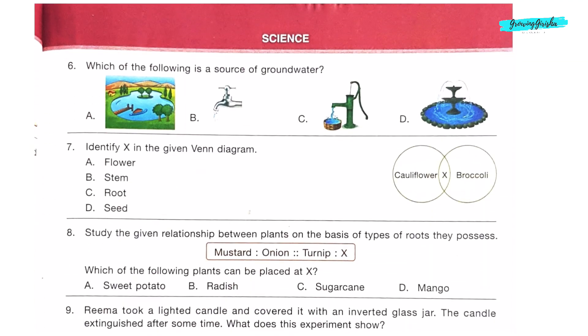Question 6: Which of the following is the source of ground water? Hand pump is a source of ground water, so option C. Question 7: Identify X in the given Venn diagram. As per the given Venn diagram, X is common between cauliflower and broccoli. The common thing about cauliflower and broccoli is that they are flower. So option A is the correct answer.